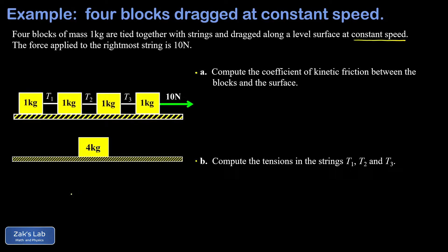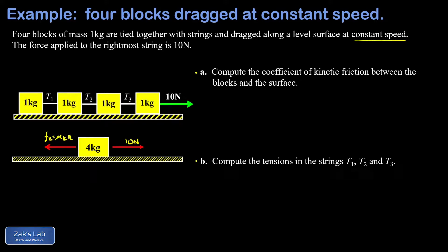We treat that four-kilogram block as a single mass experiencing an external force of 10 newtons to the right and a friction force pointing to the left. That friction force equals μk times the normal force. The force of gravity on this block is mg, where m is 4 and g is 9.8, giving a weight of 39.2 newtons. The normal force pointing up has exactly the same magnitude as the weight, so the normal force is 39.2 newtons, meaning the total friction force on the entire system is 39.2 times μk.